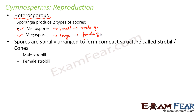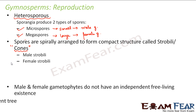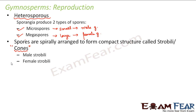The spores are spirally arranged to form compact structures called strobili or cones. In case of gymnosperms, strobili are more commonly known as cones — we often refer to them as male cones and female cones, as seen in the picture of a pine tree. Each type of cone produces the respective type of spore: microspores form the male cone and megaspores form the female cone.